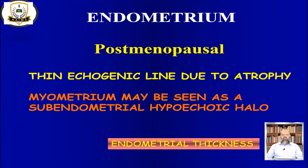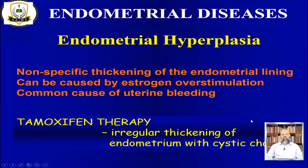In the menstrual cycle, assessment depends on whether it is in the proliferative phase — early proliferative, late proliferative, or secretory phase. In postmenopausal women, there will be a thin echogenic line due to atrophy. The endometrial thickness decreases, so there will be atrophy of the endometrium. Therefore the myometrium may be seen as a sub-endometrial hypoechoic halo, and endometrial thickness is very important.